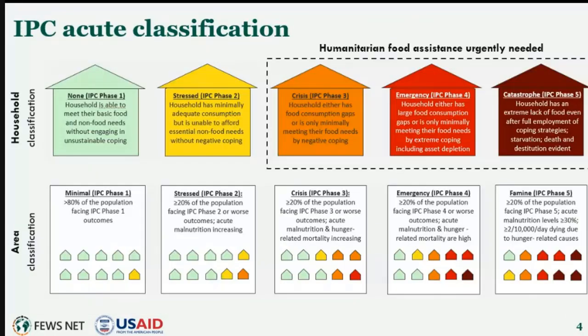To classify the severity of acute food insecurity, FEWS NET uses the Global Integrated Phase Classification Scale. The scale consists of five levels of severity: phase one being minimal; phase two being stress, where households minimally have adequate food consumption but are unable to afford their non-food needs. At levels three and above — crisis IPC phase three, emergency IPC phase four, and catastrophe IPC phase five — households need urgent food assistance to prevent or mitigate the severity of food consumption gaps and acute malnutrition. When at least 20% of the population in a given area is expected to meet the conditions that define a certain IPC phase, we map that phase.